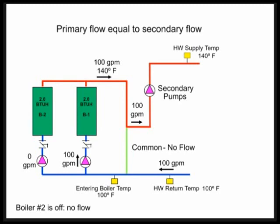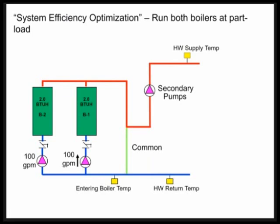Maybe we should do system efficiency optimization, we call it, where you run both boilers maybe at part load. Here's an example of that. We see this specified a lot, and if you're specifying this on primary secondary, make sure you're getting what was promised or what was advertised.